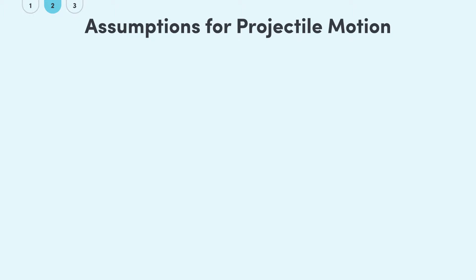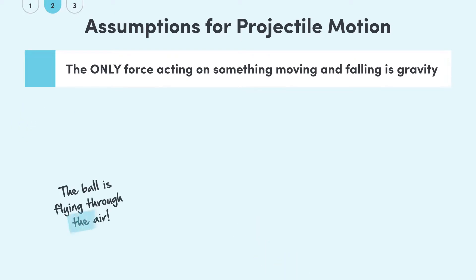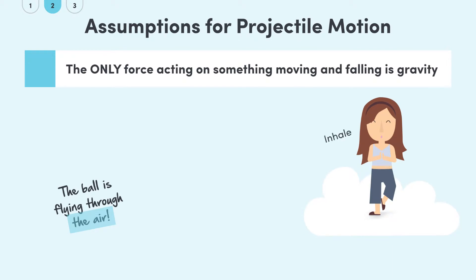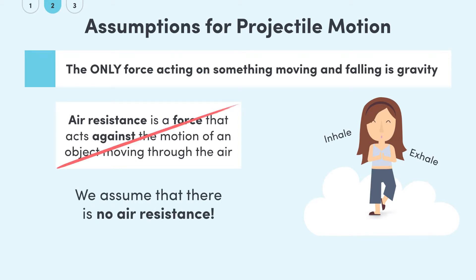Firstly, and most importantly, we say that the only force that acts on something moving and falling is gravity. This might sound obvious since it's just flying through the air, but the catch comes from air resistance — a force that acts against the motion of an object, slowing it down. Fortunately, we can just ignore all of this by using our assumption. It's good to keep in the back of your mind though, and we'll touch on it briefly in the practical video later on.